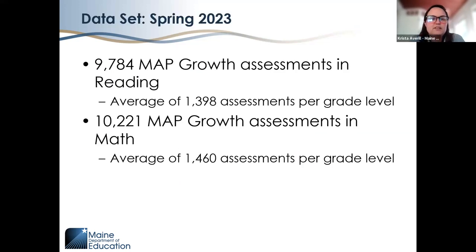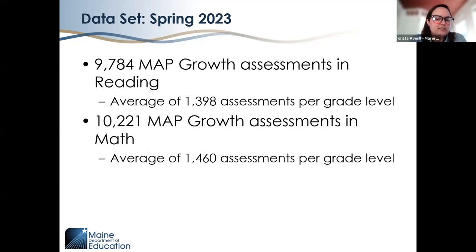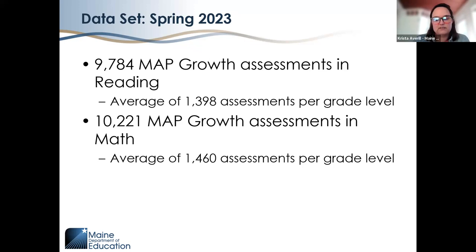Regarding the data set: in spring 2023, 9,784 MAP Growth assessments were administered in reading with an average of 1,398 assessments per grade level. Similarly, 10,221 MAP Growth assessments were administered in math with an average of 1,460 per grade level. These numbers represent only our double testers — a substantial portion of the Maine student population who took MAP Growth in addition to the Maine Three-Year Assessment.